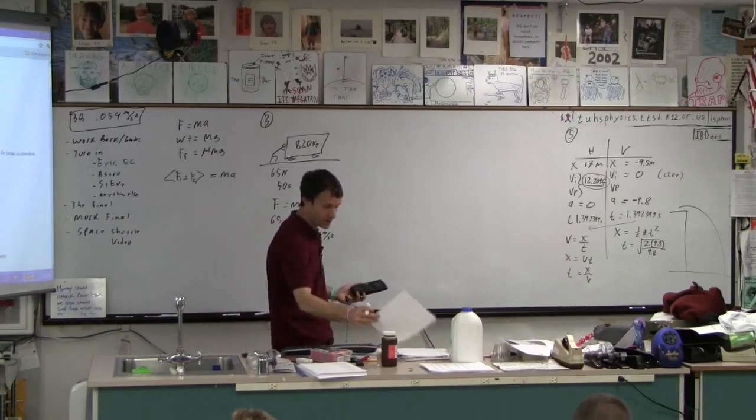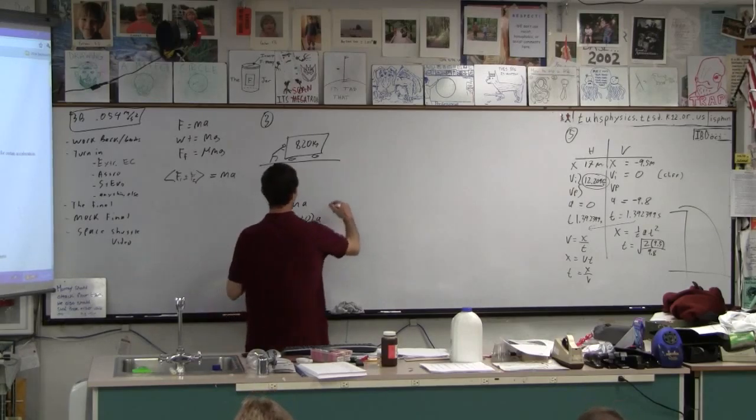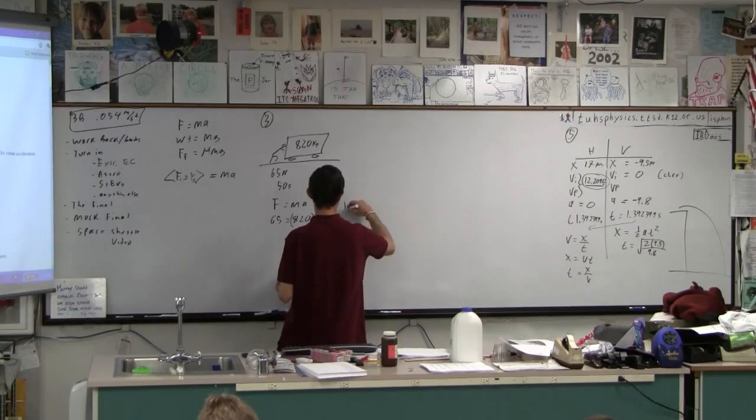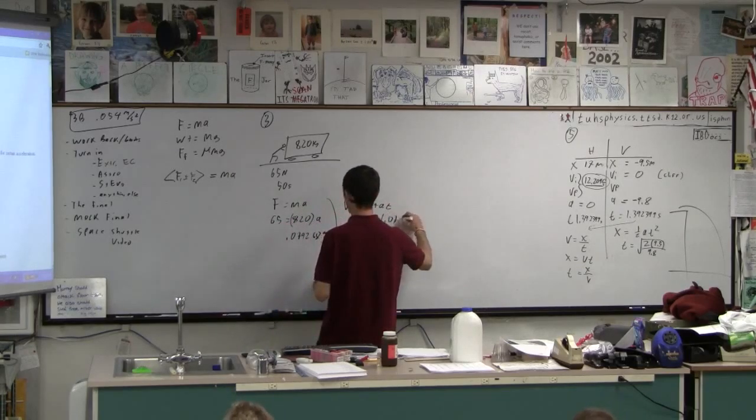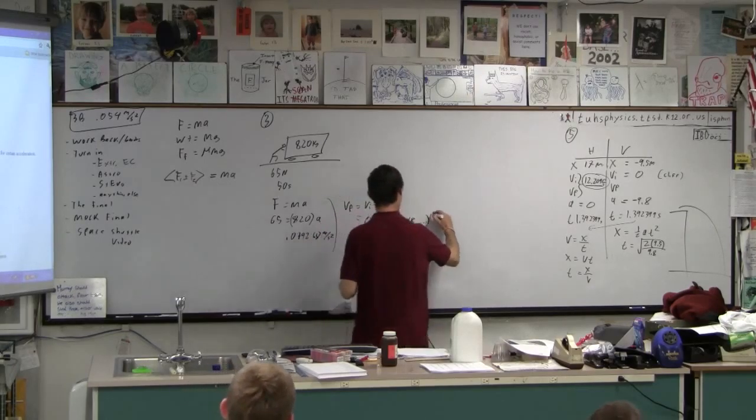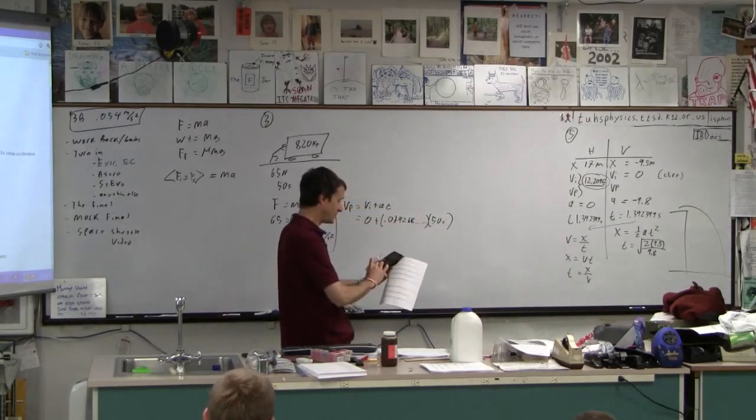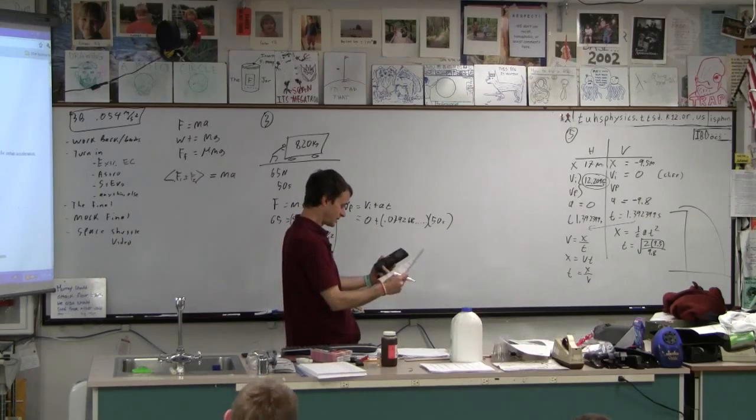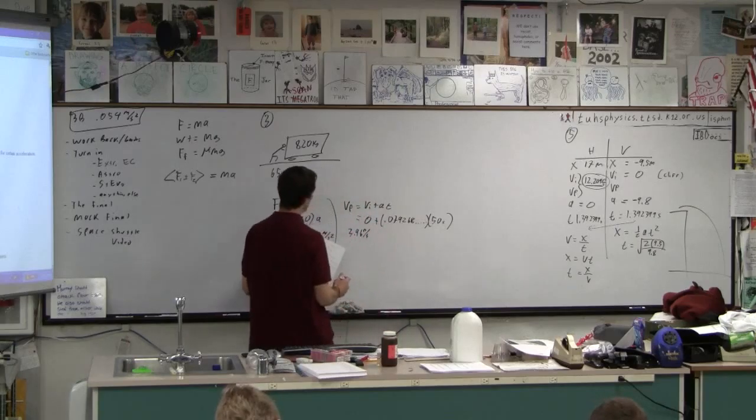And then it doesn't ask for the acceleration. What does it say? What's the final velocity? So I'm going to use, heaven forbid, another formula from the other chapter. VF is VI plus AT. So if the initial velocity is 0, we go 0 plus 0.079268, times the 50 seconds. So I'm going to multiply this by 50 and hopefully get 3.96, and I did. And meters per second is the final velocity.